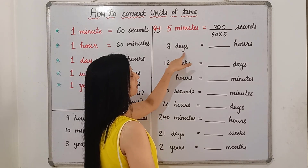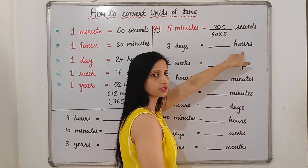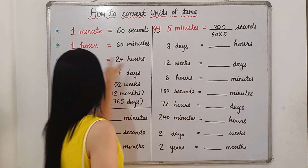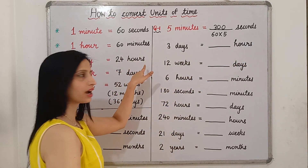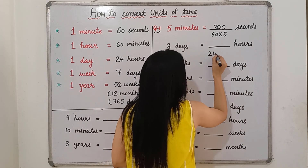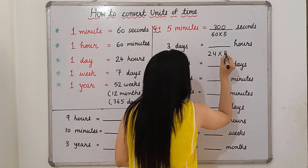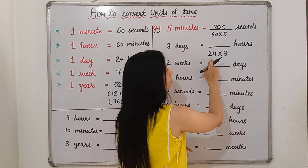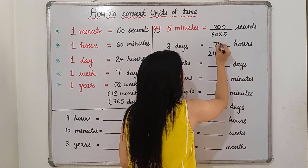Next: 3 days is equal to how many hours? We know that in 1 day there are 24 hours, so in 3 days it will be 24 multiplied by 3, which equals 72 hours.